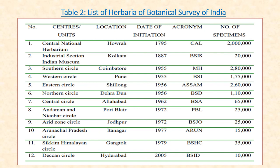Table 2 lists herbaria maintained by the Botanical Survey of India, providing information on centers, units, location, date of initiation, acronyms used, and number of specimens. The centers include: National Herbarium, Howrah; Industrial Section of Indian Museum, Kolkata; Southern Circle, Coimbatore; Western Circle, Pune; Eastern Circle, Shillong; Northern Circle, Dehradun; Central Circle, Allahabad; Andaman & Nicobar, Port Blair; Arid Zone, Jodhpur; Arunachal Pradesh Circle, Itanagar; Sikkim Himalayan Circle, Gangtok; and Deccan Circle, Hyderabad.